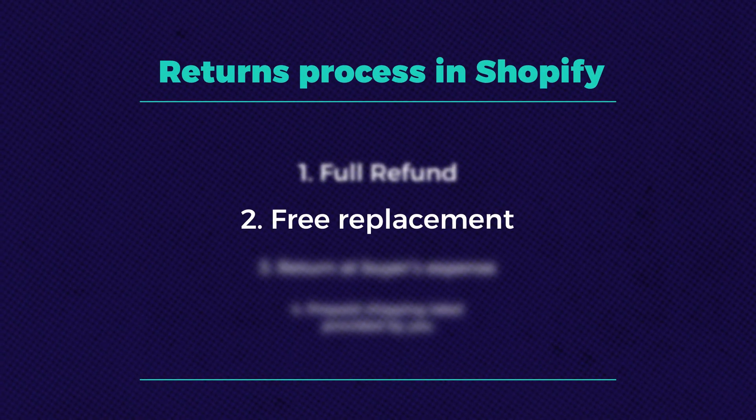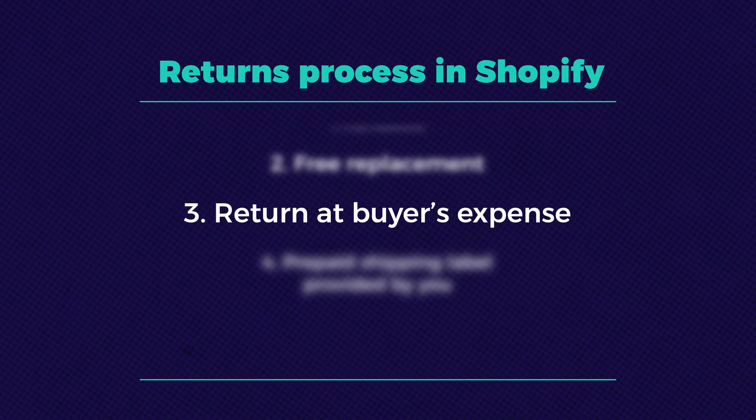The first option is a full refund or free replacement. If the product is inexpensive to source, you can either offer a full refund or send a free replacement, depending on the situation and reason for the return. The second option is return at buyer's expense — you can ask the buyer to return the item to you, your dropshipping supplier, or your 3PL, and the buyer is responsible for paying the return shipping cost. Once the item is received, you can issue the refund. While this method is common, it can lead to a negative customer experience and may harm your brand's reputation, so if you're building a long-term trusted brand, think carefully before going with this option.